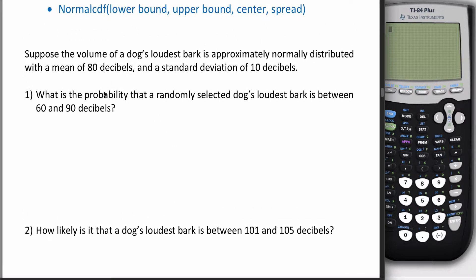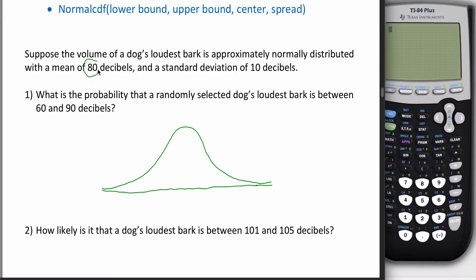This first example you've seen before. Suppose the volume of a dog's bark is approximately normally distributed — so I can draw this bell shape. We have a population mean, mu, of 80, which goes right in the middle of the distribution. The standard deviation, sigma, is 10, and that tells you how much to count up and down. The question asks: what is the probability that if you grab one dog at random, its bark is between 60 and 90 decibels?